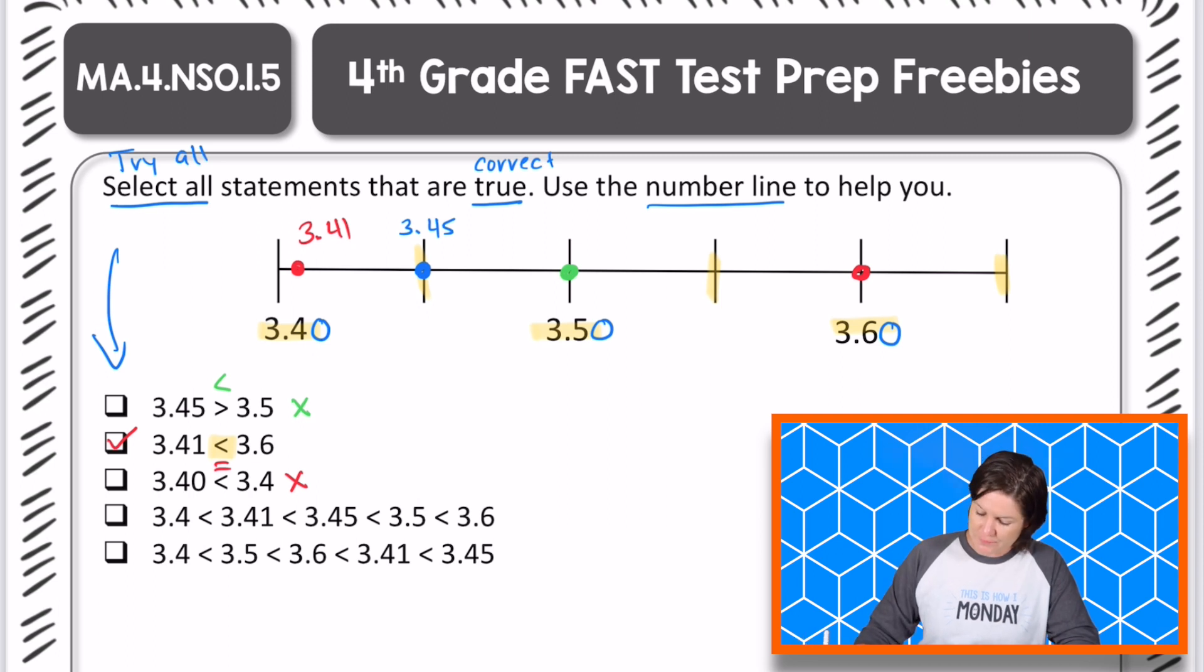For the next one, we've got a bunch of them. We first have 3.4 tenths is less than 3.41 hundredths. That works out. 3.41 hundredths, is that less than 3.45 hundredths? Yes, it is. So, so far we're good. 3.45 hundredths, is that less than 3.5 tenths? Yes, it is. So we're still good. 3.5 tenths, is that less than 3.6 tenths, which is over here? Yes. So this is true.